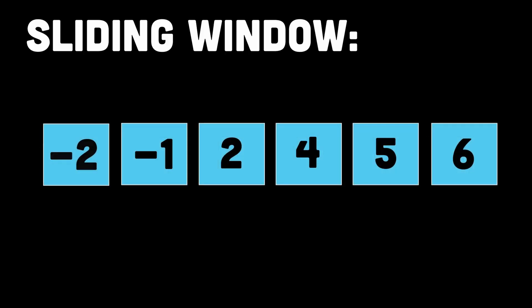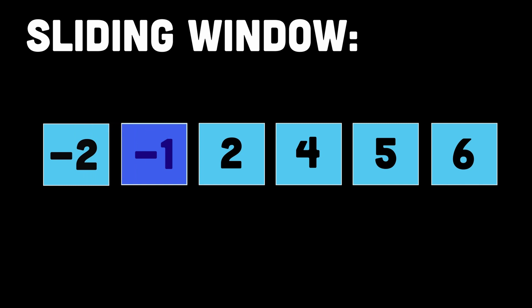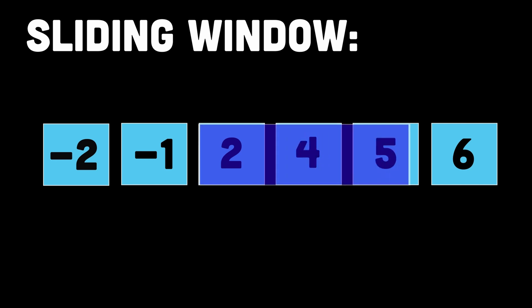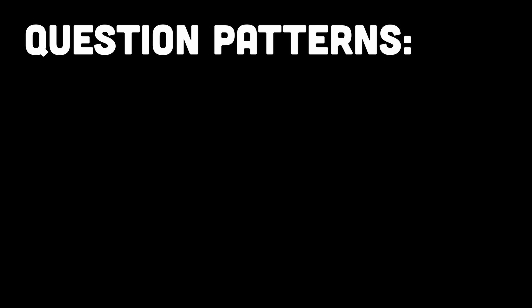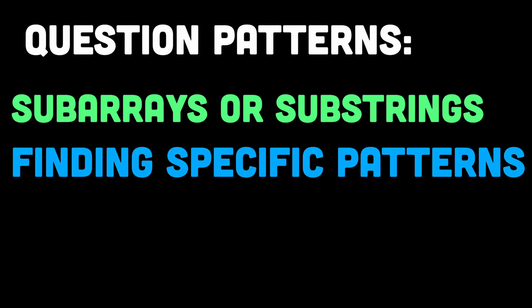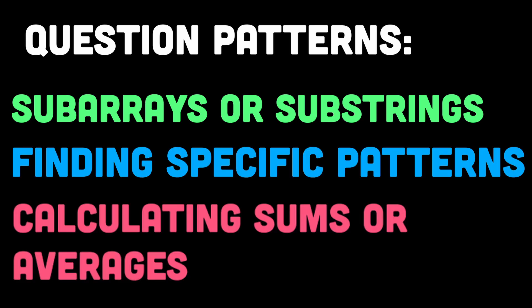The second pattern is sliding window. Imagine you have a sequence of elements like numbers or characters and you need to find a specific pattern or solve a problem within that sequence. The sliding window approach uses a window that starts at the beginning of the sequence and moves through it one element at a time, while keeping track of some information about the window. This allows you to cover many problems related to arrays, strings, and hash tables, including sub-arrays or sub-strings, finding specific patterns, and calculating sums or averages.